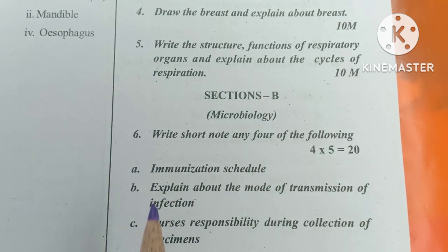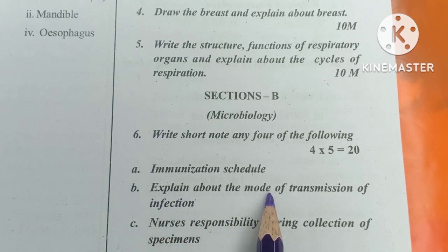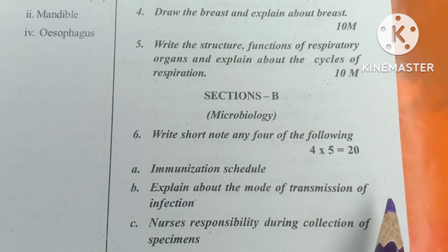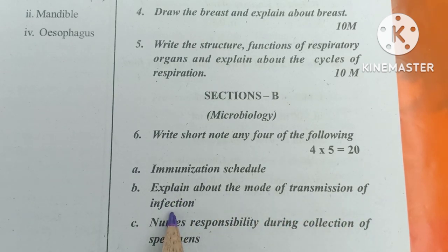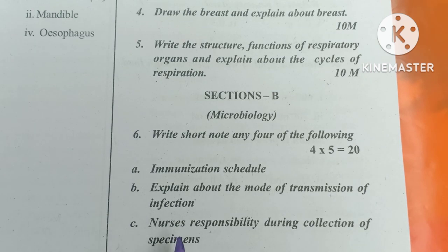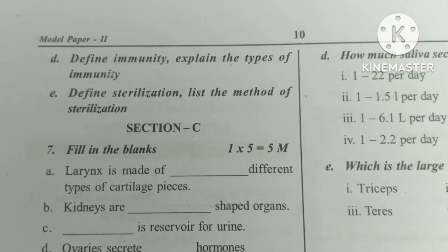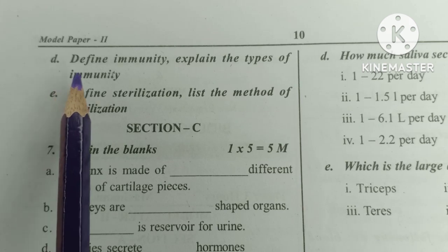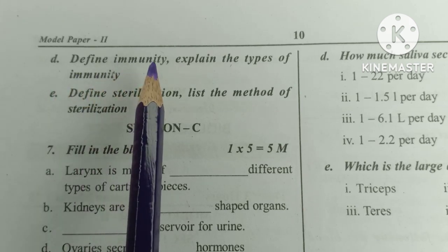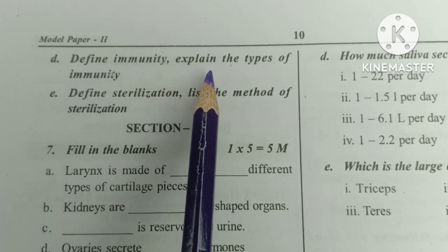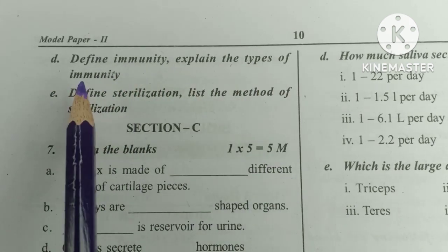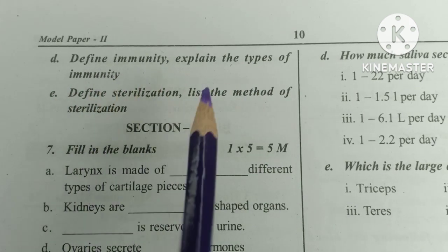Number B: Explain about the mode of transmission of infection. C: Nurse's responsibility during collection of specimen. D: Define immunity and explain the types of immunity.